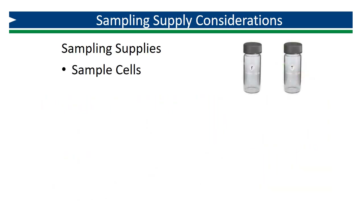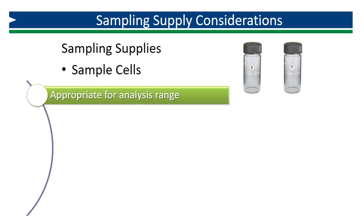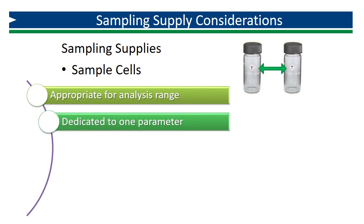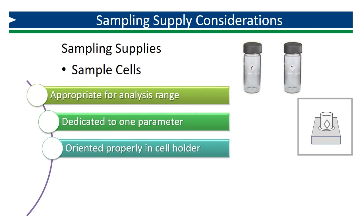Operators should also be aware of the size and condition of their sample cells as well as the parameters for which they are used. For one common manufacturer, a 25 mL sample cell can be used for low range, but the high range requires a specific cell with a small, light path length. Each parameter should have dedicated sample cells. It is a good idea to label your sample cells so they are not used for the wrong analysis. DPD reagent for total chlorine contains potassium iodide, which can bias free chlorine results high. Sample cells should be oriented properly and consistently in the cell holder to ensure the appropriate path length and to account for potential blemishes.